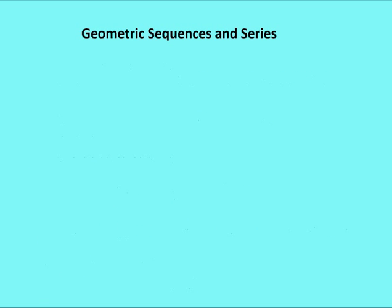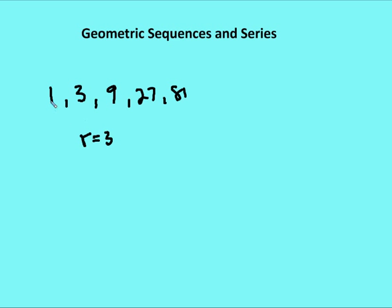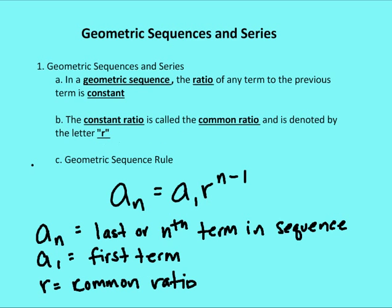Let's take an example. If I have the terms one, three, nine, 27, and 81, the ratio between a term and its preceding term is constant. So that ratio here — three to one, nine to three, 27 to nine, 81 to 27 — is going to be three. That ratio is not one term to the subsequent term, so it does not equal one third. This is a common mistake that many students make. The ratio is one term to the preceding term, so my common ratio R is equal to three.